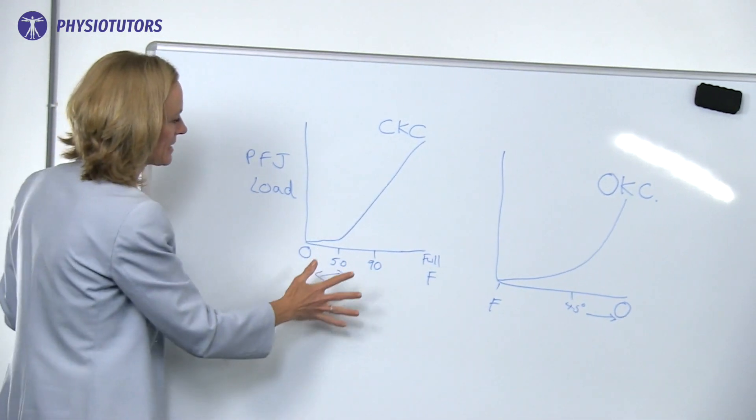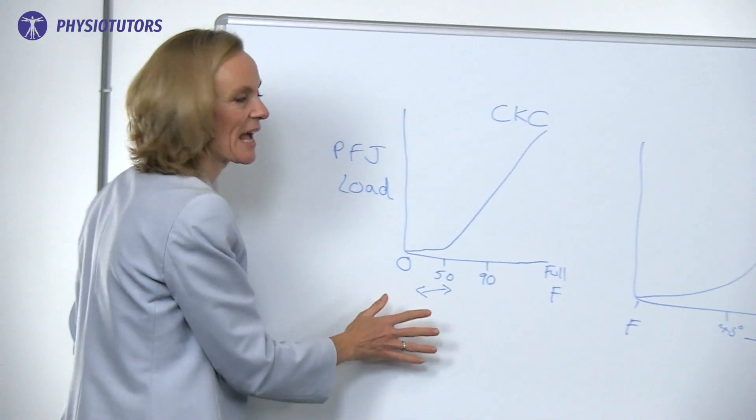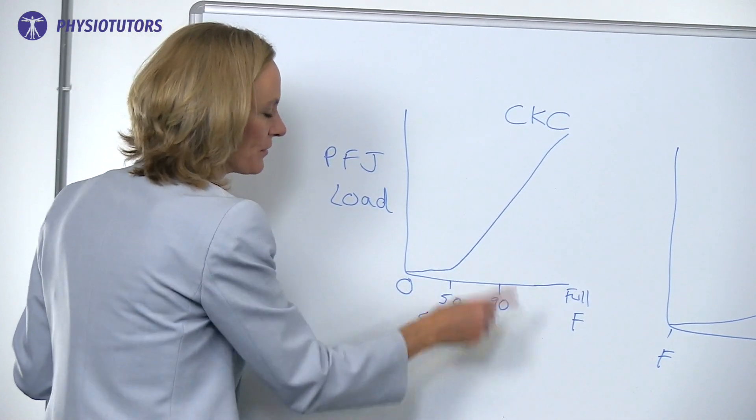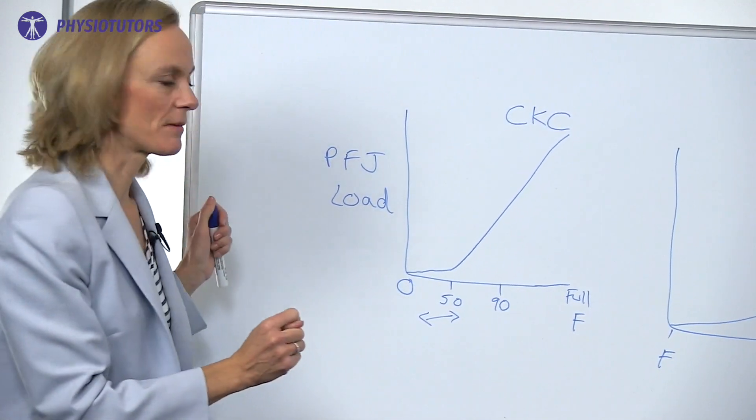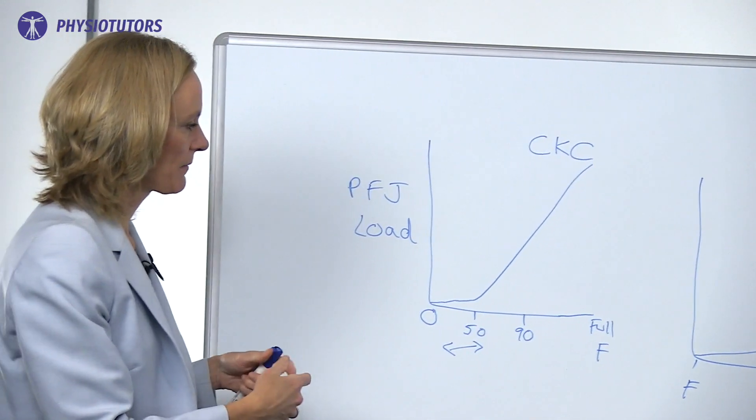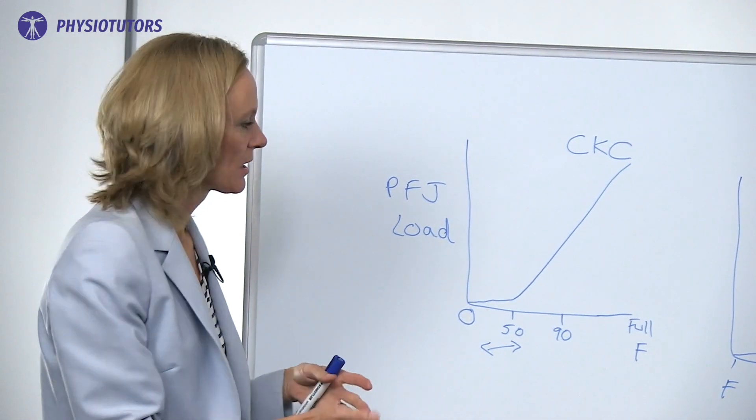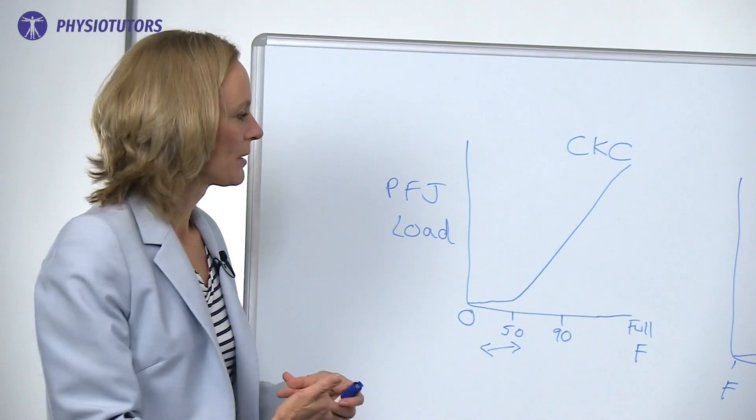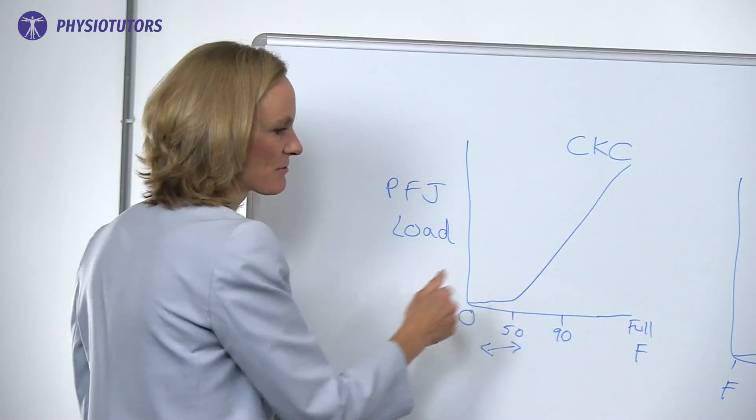So let's come back to this closed kinetic chain graph first. We don't want lots of knee flexion in this irritable patellofemoral joint, so I'm going to choose a couple of exercises, one that's more concentric and one that's more eccentric, that are easy to reproduce at home but give us loading in this range.